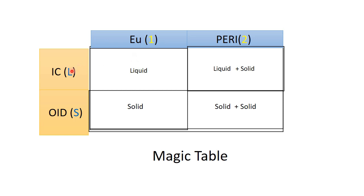Applying the table: for eutectic — 'U' gives one, 'ic' gives liquid — so there is only one phase on the left-hand side, and it is liquid. For eutectoid — 'U' gives one, 'oid' gives solid — so only one phase on the left, and it is solid. For peritectic — 'peri' gives two, 'ic' gives liquid — so two phases, one of which is definitely liquid, making it liquid plus solid. For peritectoid — 'peri' gives two, 'oid' gives solid — so two phases, both solid, giving solid one plus solid two on the left-hand side.